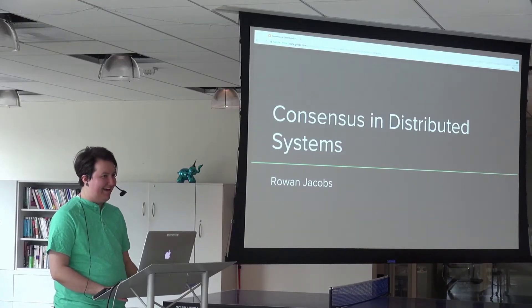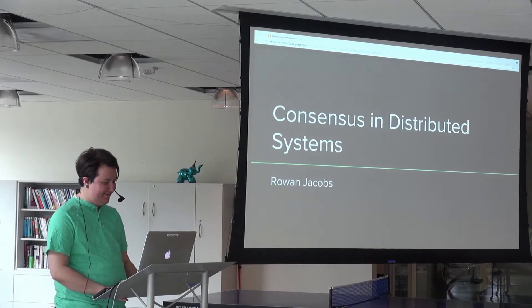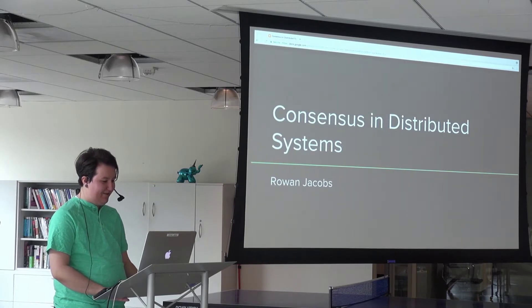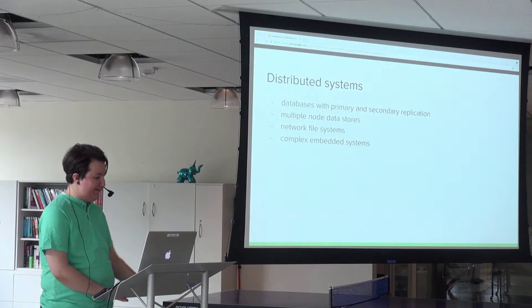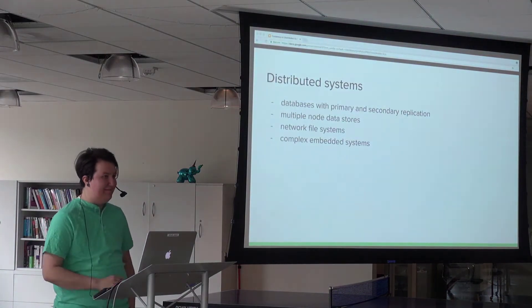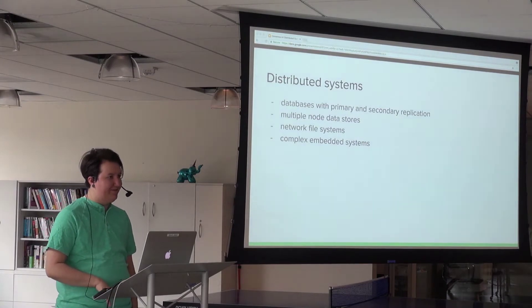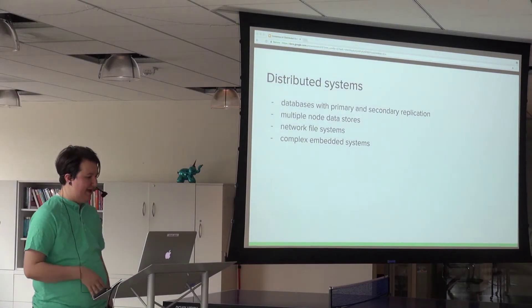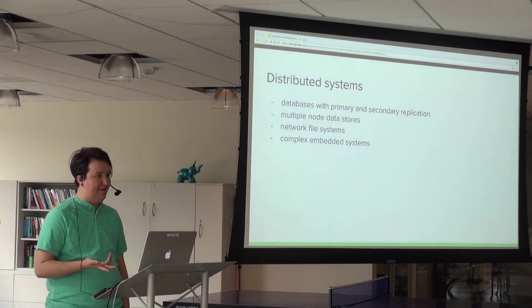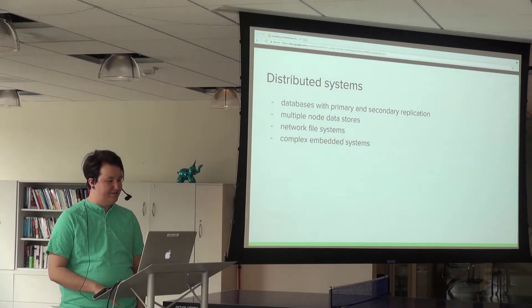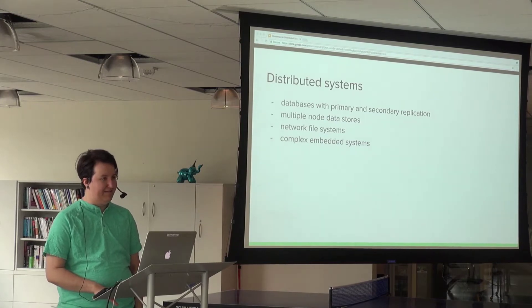Alright, so today I'm talking about consensus in distributed systems. What the heck is a distributed system? Some examples might be multi-node data stores like Consul or etcd, a database with primary and secondary replication, network file systems, or even complex embedded systems with multiple chips and sensors.